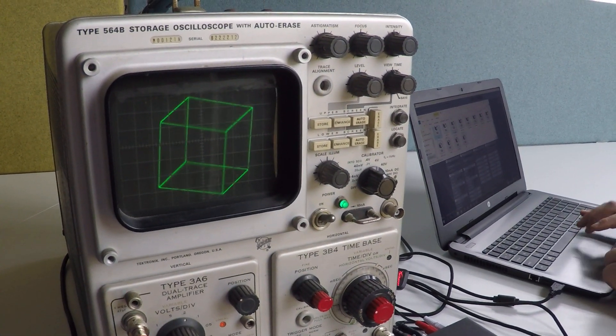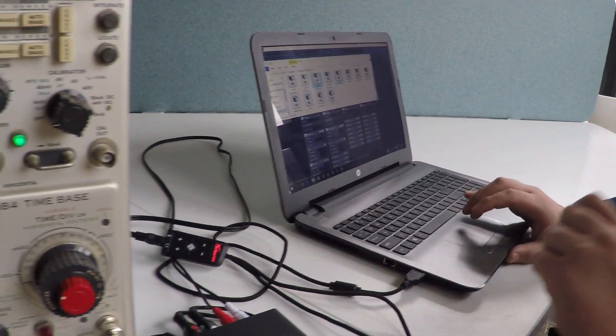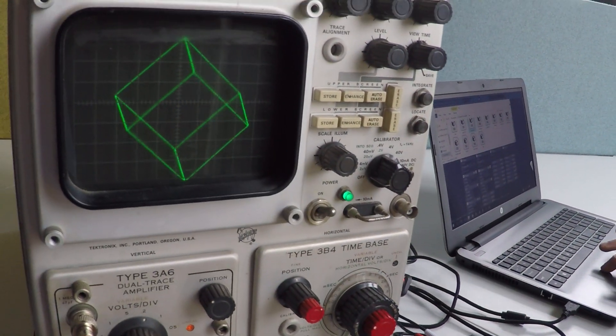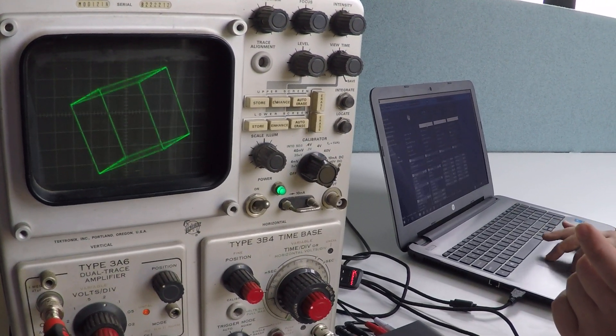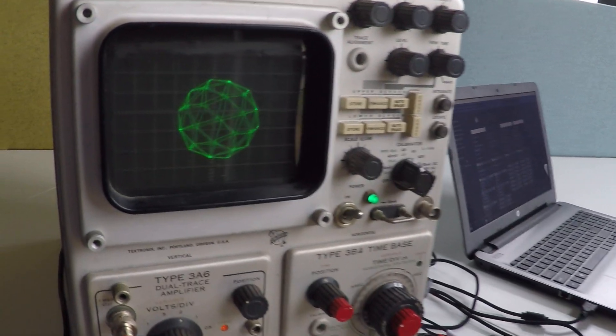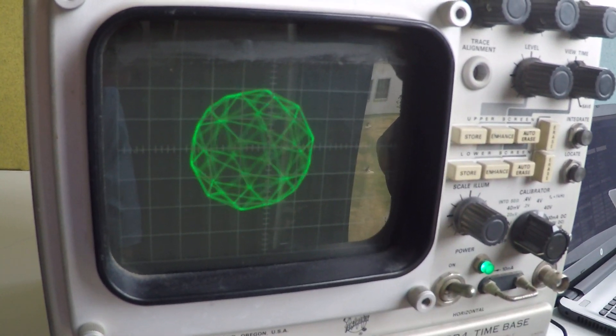This specific software also allows you to import OBJ files and it'll take the vertices of those files and essentially convert them into sound waves so that you can display it on an oscilloscope.